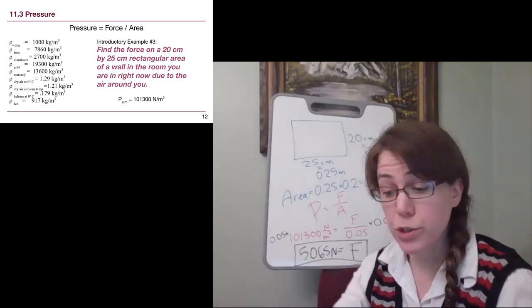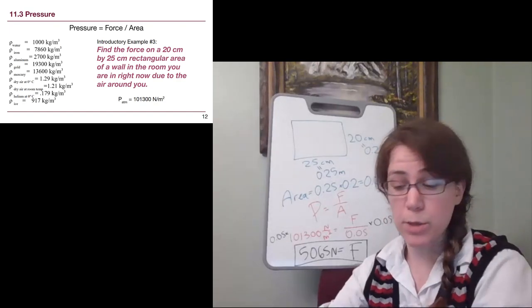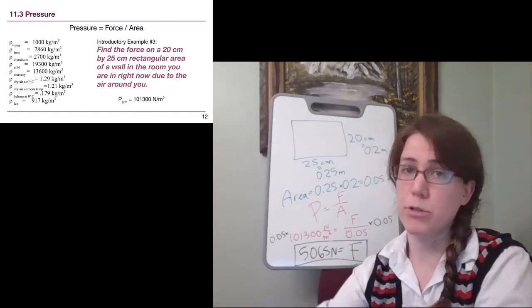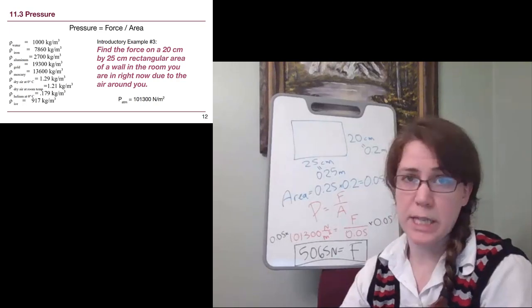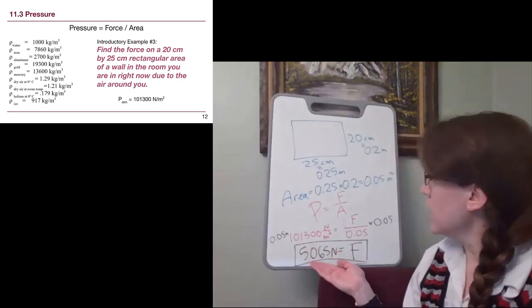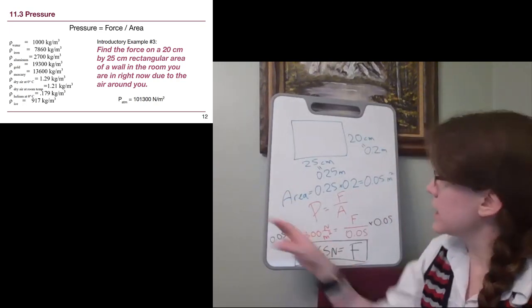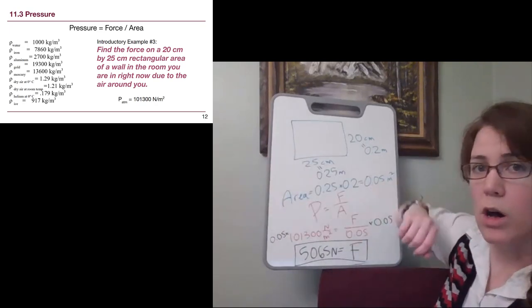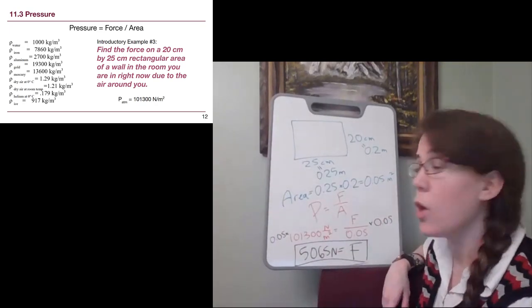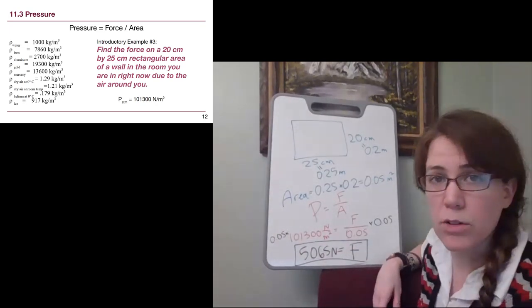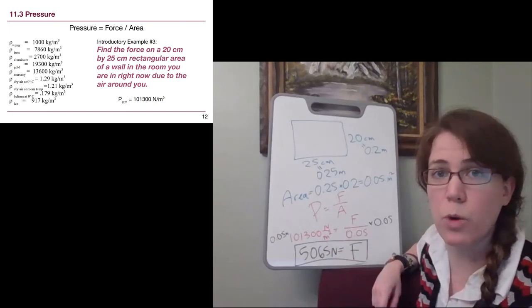That should seem like a huge force compared to some of the numbers that we were talking about all throughout chapters 4 and 5 and even 6. If this force is just a small section of the wall that air is pushing on, why isn't that wall falling down? That's a huge force pushing on the wall.